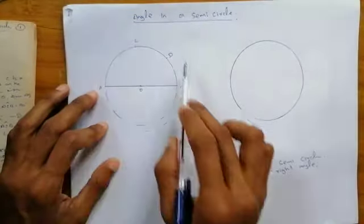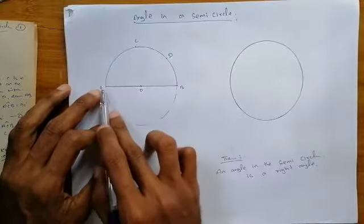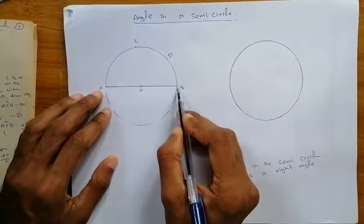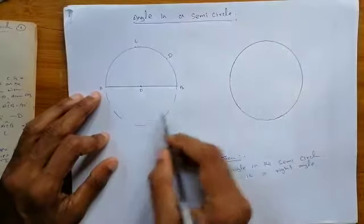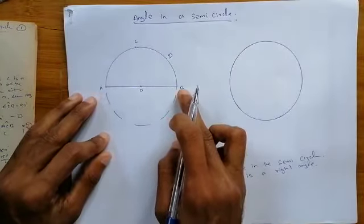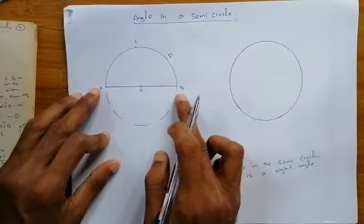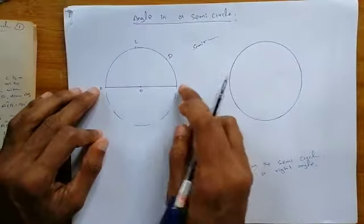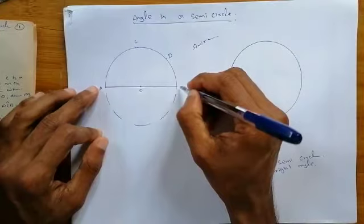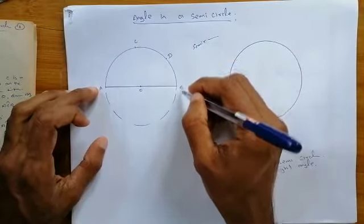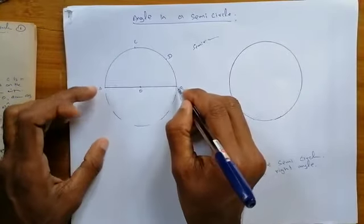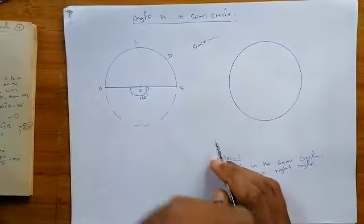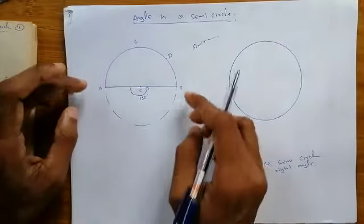If you observe this figure, you have a semi-circle. AB is the diameter. We draw the other part of the semi-circle with a dotted line. AB with the circle — AB is on the semi-circle, and we draw the other half of the circle. So AB is an arc. AB is a semi-circle. AOB is the diameter, so AB is a semi-circular arc. The ending points A and B are connected to the center. The angle is 180 degrees, because the diameter is always a straight line.